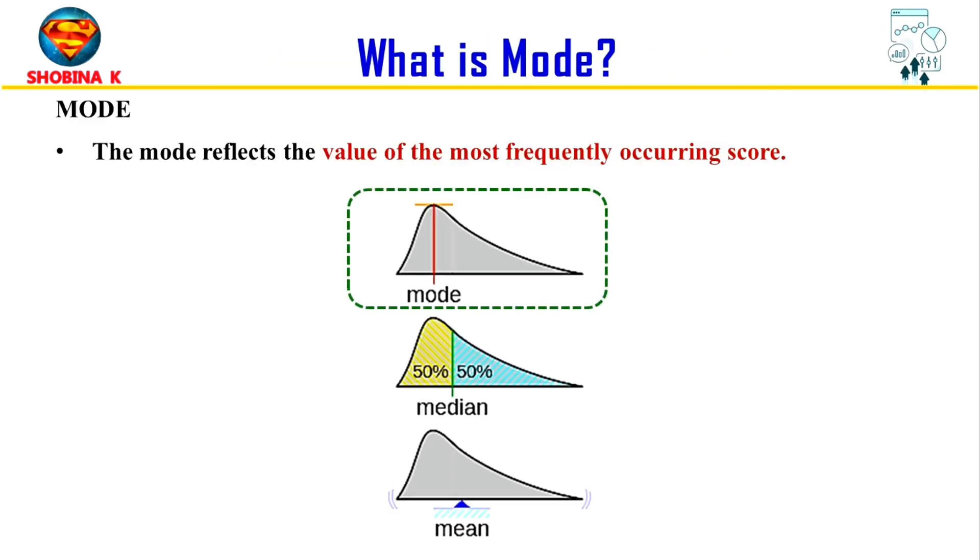First, what is mode? The mode reflects the value of the most frequently occurring score. The mode is a statistical measure representing the most frequently occurring value in a data set. The mode is the value that appears with the highest frequency in a data set, representing the most common or frequently occurring score.